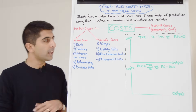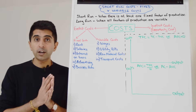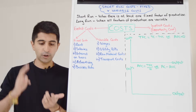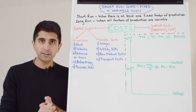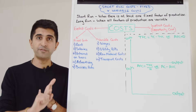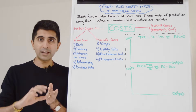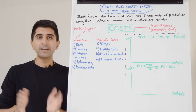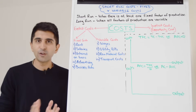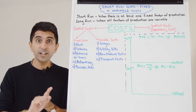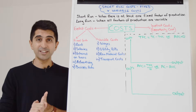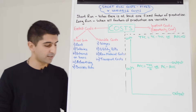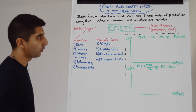What we want to do now is map what our cost curves look like in the short run. In this video we're going to look at total fixed cost, average fixed cost, and average variable cost. Total fixed costs and average fixed costs are very easy to draw because their shapes have got nothing to do with the law of diminishing returns. They are the only two cost curves in the short run with nothing to do with the law of diminishing returns.